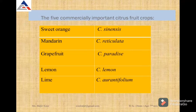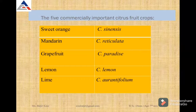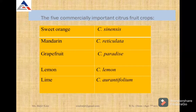The other group is Mandarins, with the scientific name Citrus reticulata. Different fruits come under the Mandarin group, such as Kinnow and King Willow Leaf. Mandarins are loose-skinned citrus species.